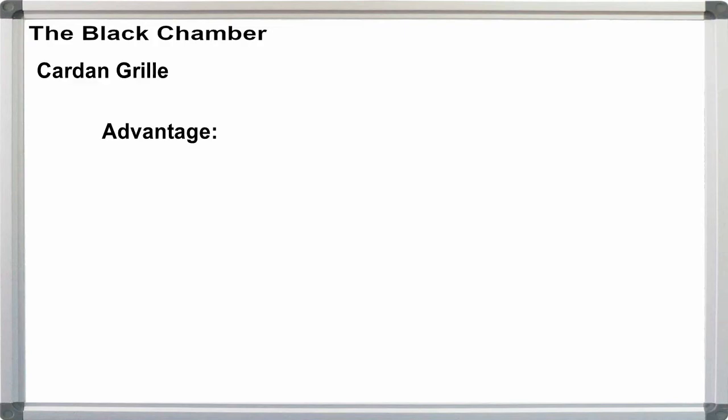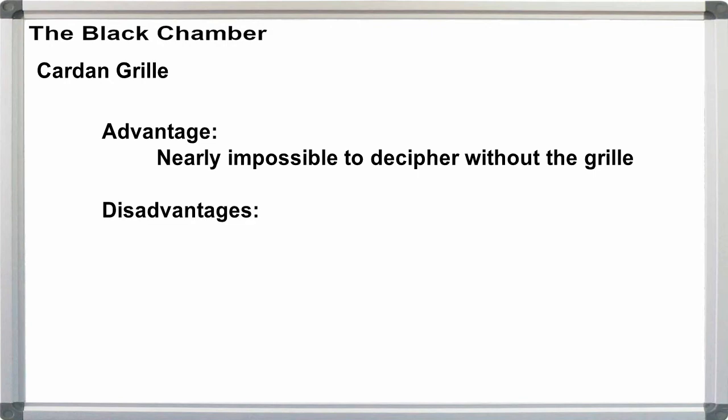The card and grill has one major advantage, which is if the null text is cleverly written, the secret message is nearly impossible to discover. However, there are two equally major disadvantages.